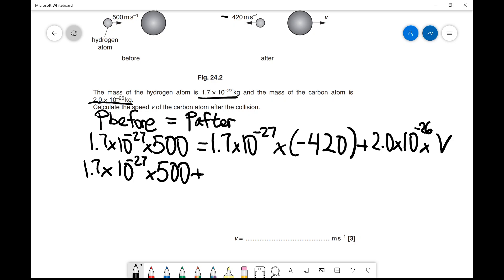So 1.7 × 10^-27 × 420 equals what remains on the right-hand side: 2.0 × 10^-26 multiplied by v.